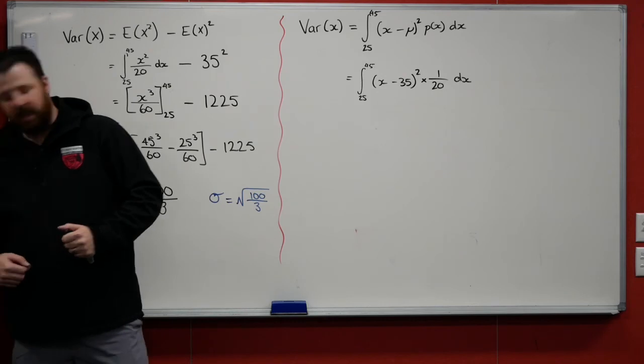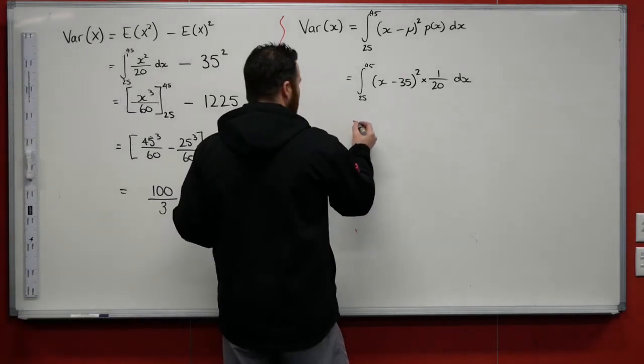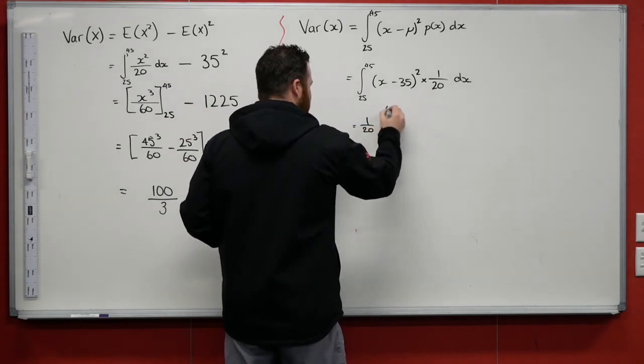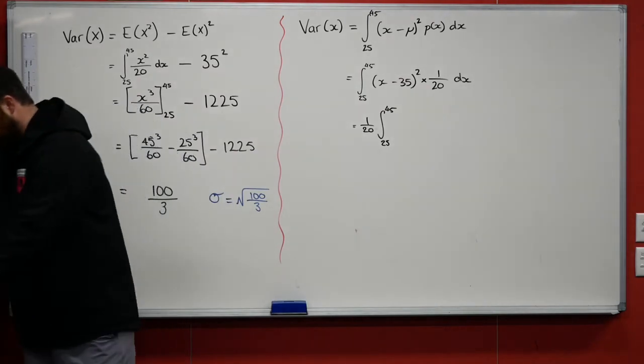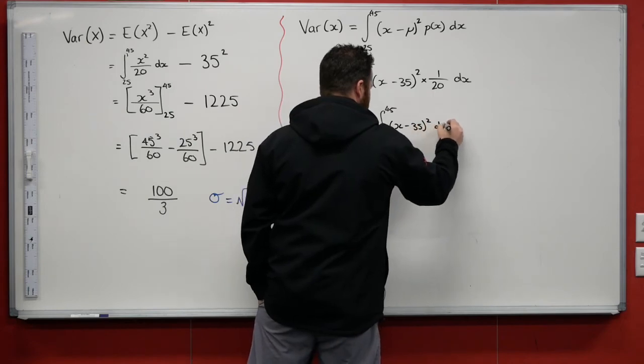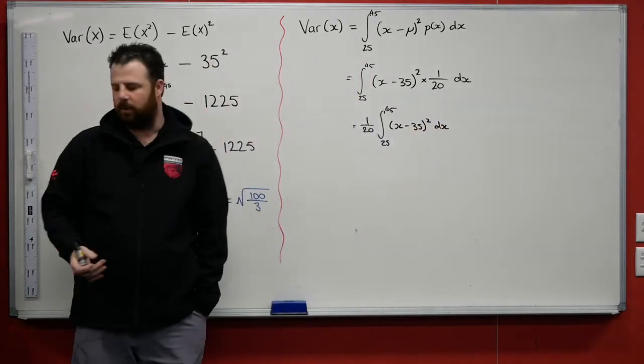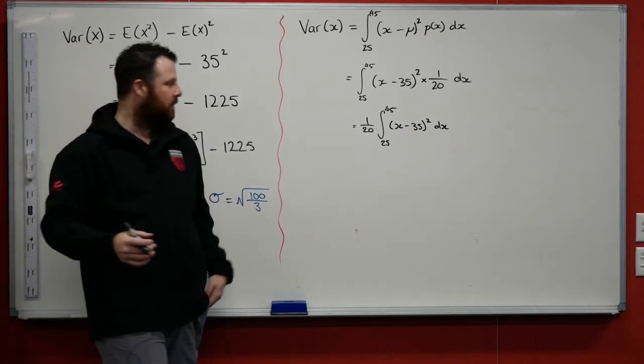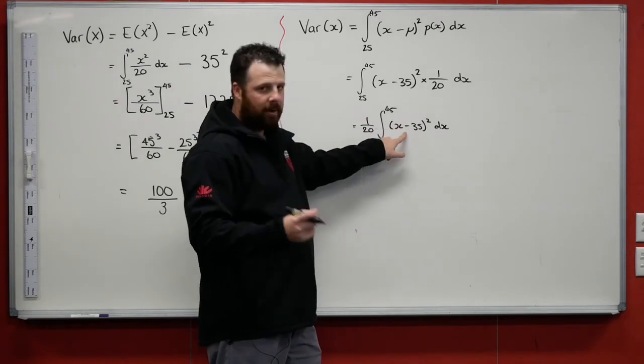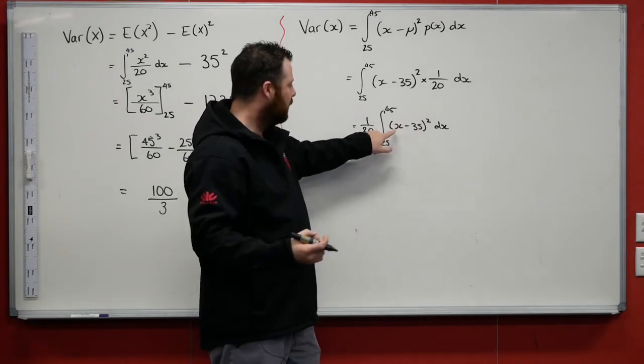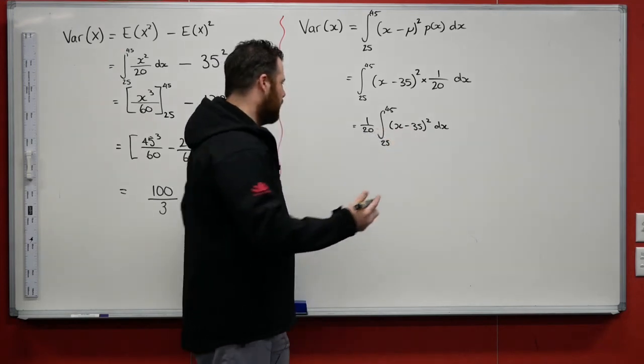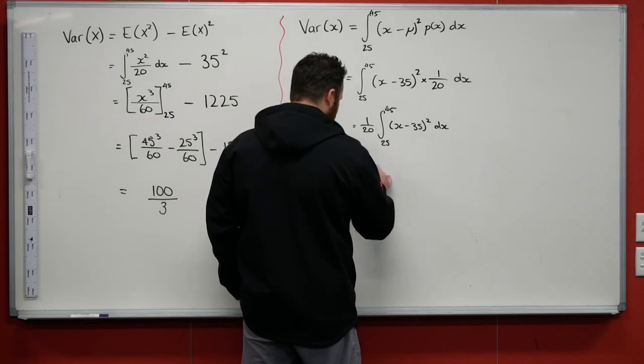What am I going to do here? I'm going to factor out that constant of 1/20 out the front. So take that, then that's going to be just leaving me (x minus 35) all squared dx. Remember, we can use our reverse chain rule, which is add 1 to the power, divide by the new power, and remember to also divide by the derivative of the inside. And the derivative of the inside is 1.